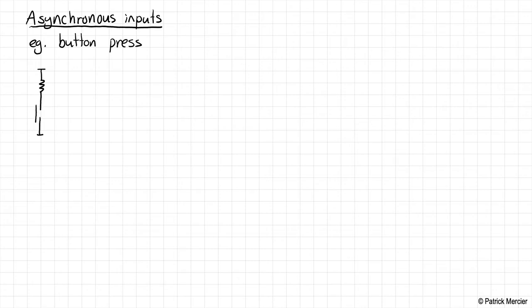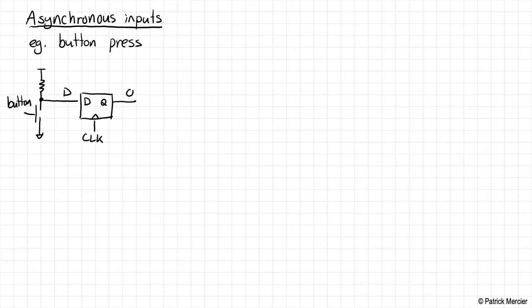Oftentimes a button looks something like this. We have a resistor pulling the logic button up high. We have a button — if pressed, it basically causes a short circuit and drops the value low. It's tied to a flip-flop here. This is D and this is output Q. So the question is: what happens if this button press occurs during the setup-hold aperture of this flip-flop?